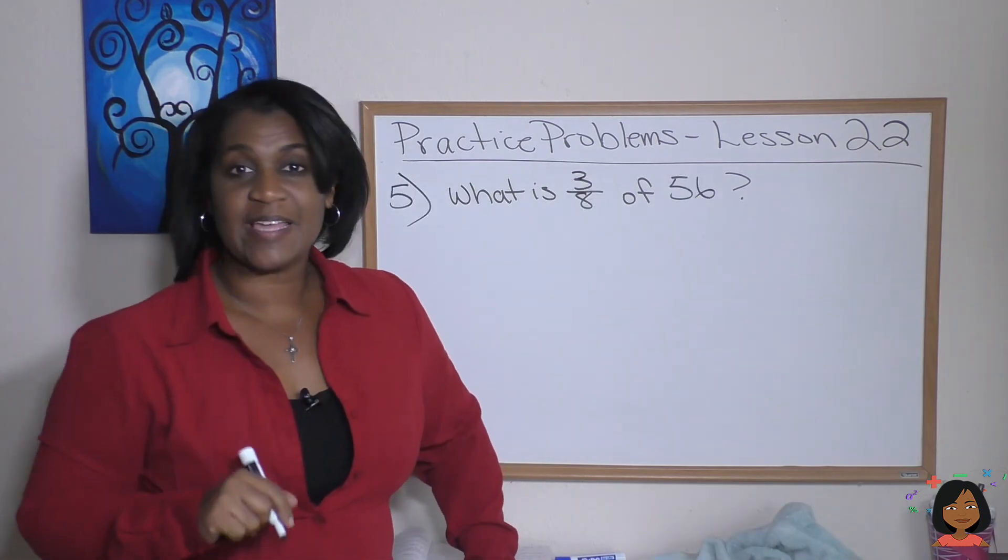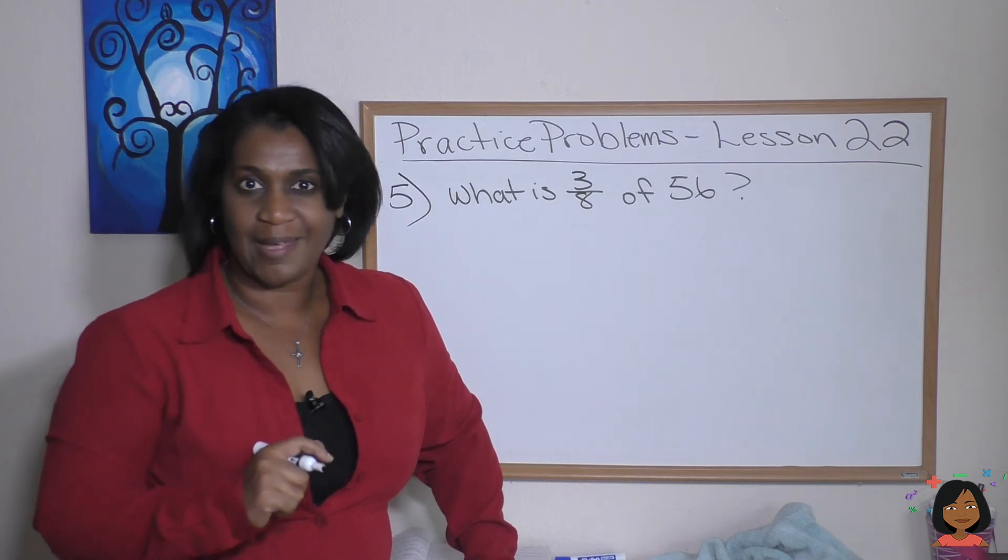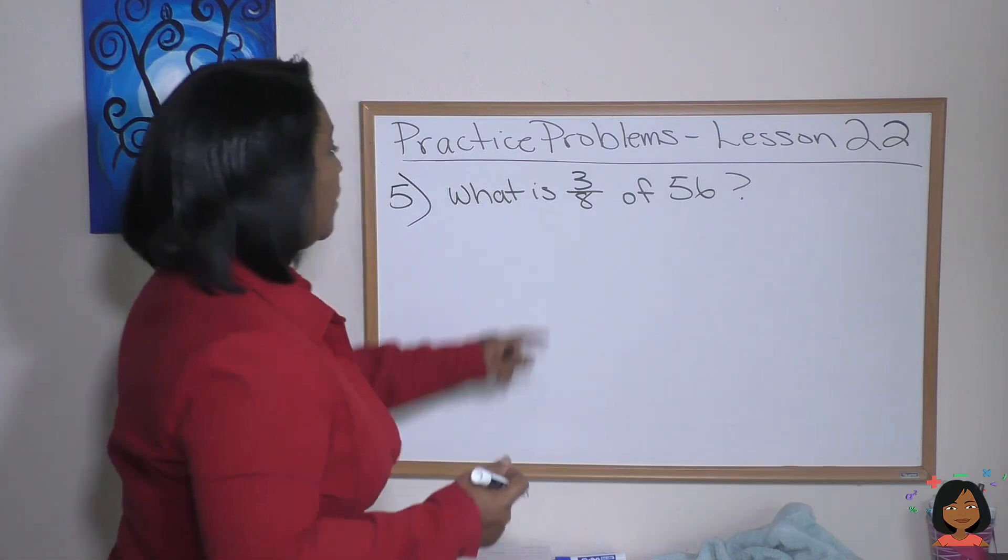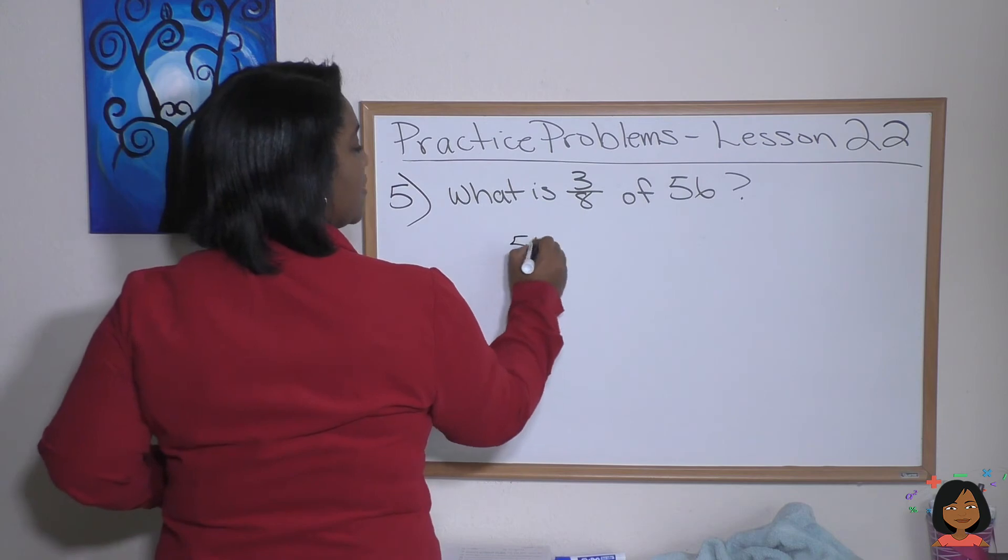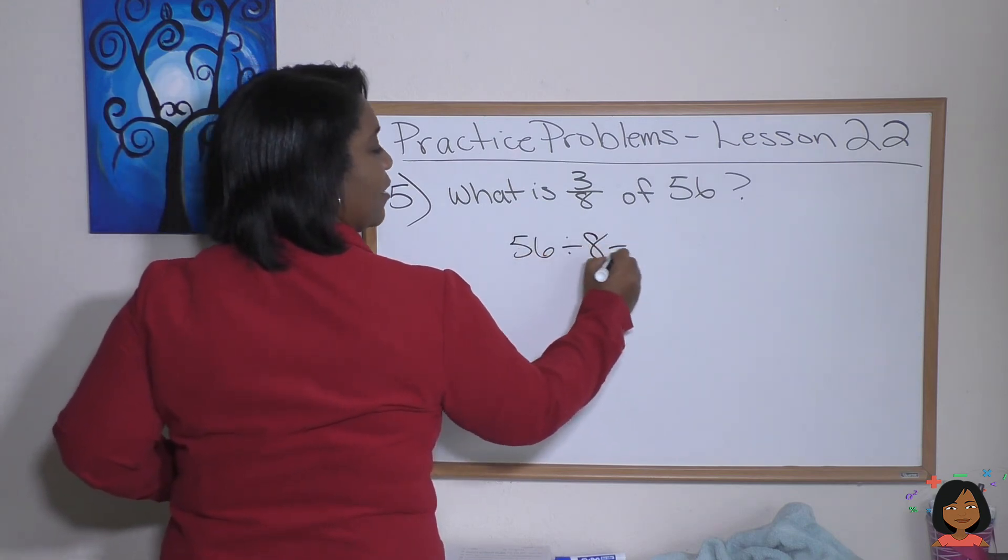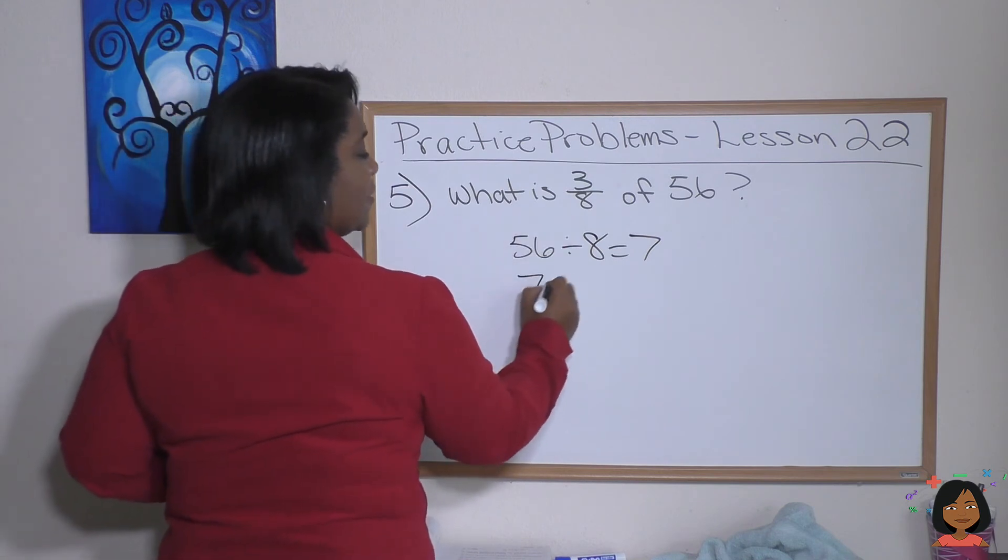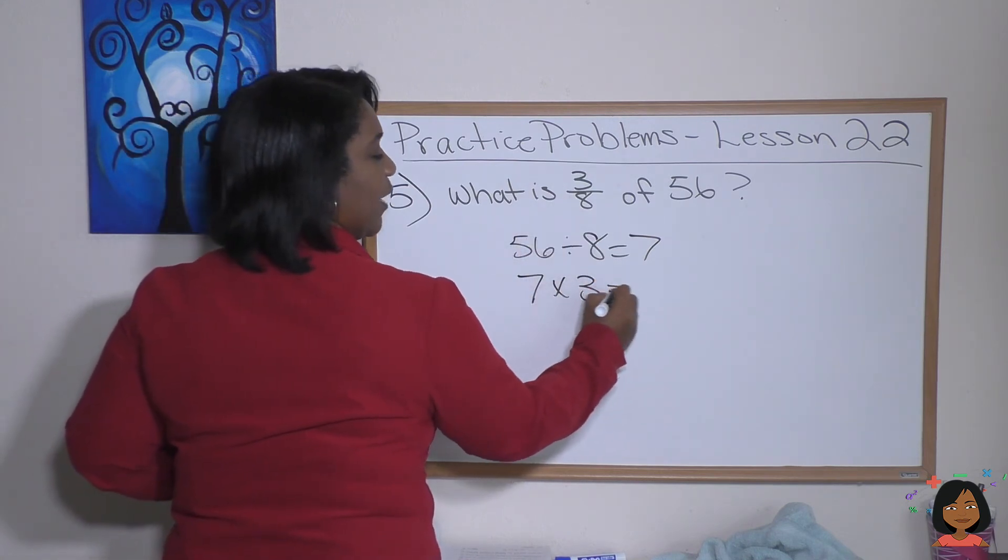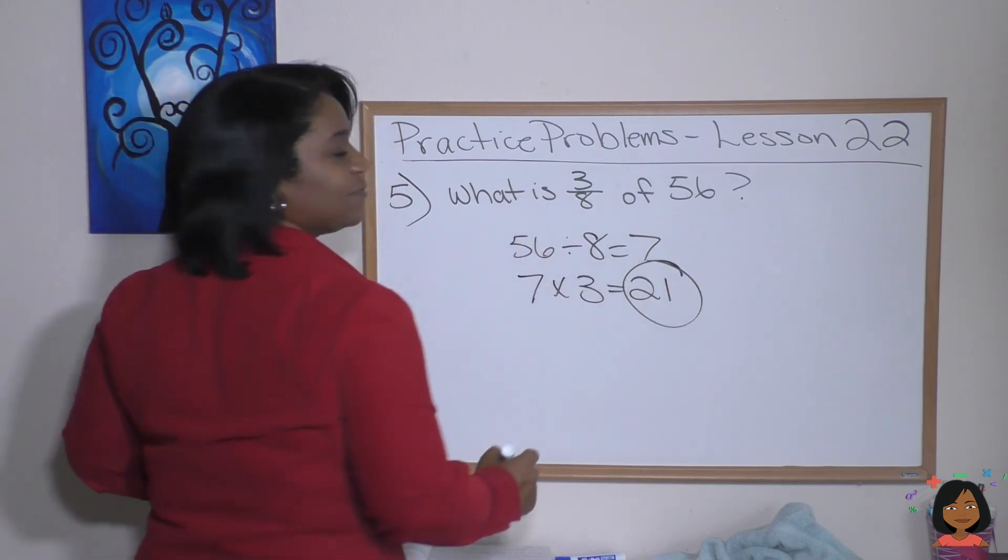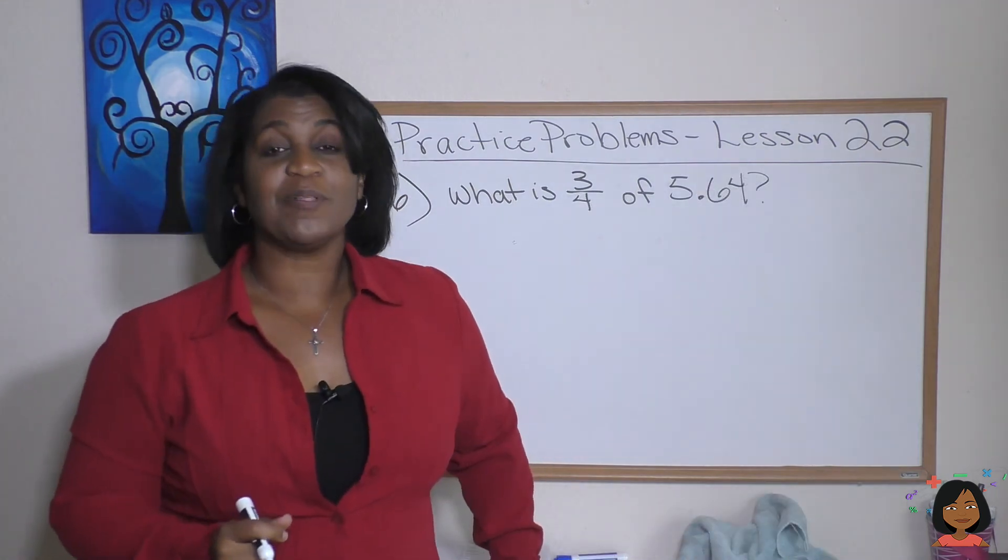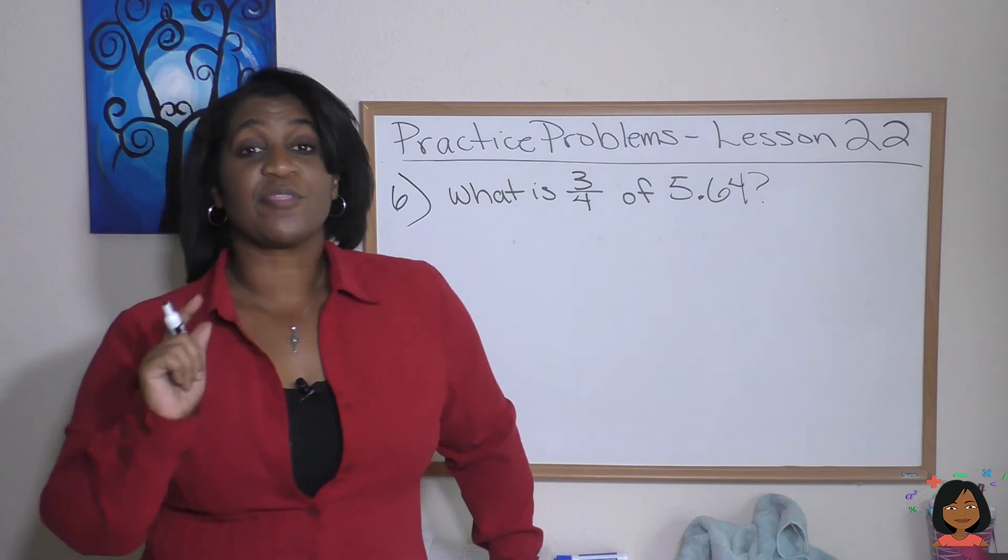Problem five. What is three eighths of 56? You got this. Let's do it. We know first thing we're going to do is 56 divided by 8, which equals 7. Step two: 7 times my 3, my numerator, equals 21. 21 is my answer.